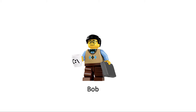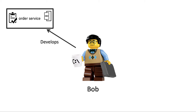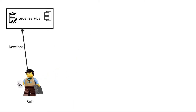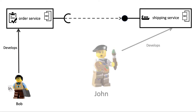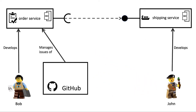Let me introduce you to the developer Bob, who works for a company which builds a webshop as a microservice architecture. Bob is responsible for developing the order service. The order service should invoke an interface's functionality of a shipping service which is developed by an independent team of another company. One of their developers is John. John thinks of himself as an artist. Bob and John do not know each other. Since the services of this component-based architecture are independently developed, each service manages its issues in a separate issue management system.